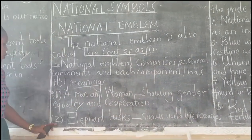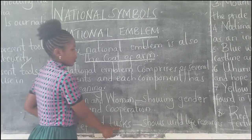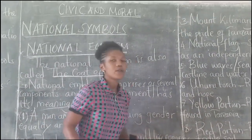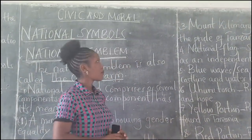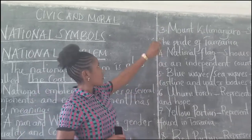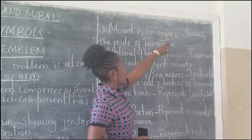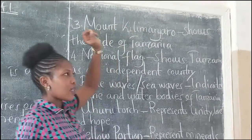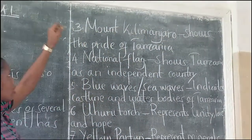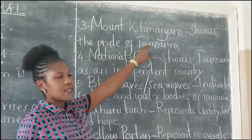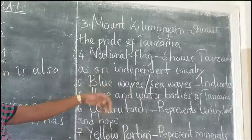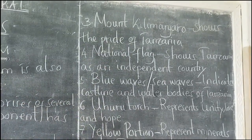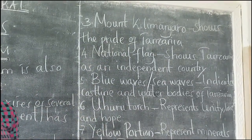Component number two is elephant tusks, which show worthy life resources. Component number three is Mount Kilimanjaro. Mount Kilimanjaro represents the pride of Tanzania — because Mount Kilimanjaro is the highest mountain in Africa.